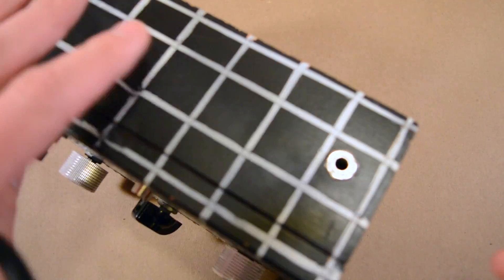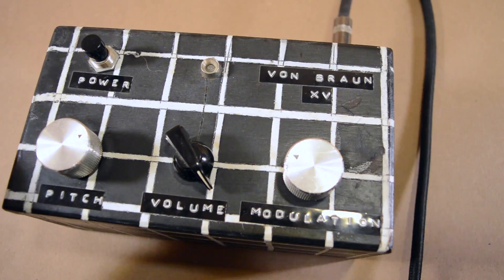Operating the Von Braun 15 is simple. Plug a quarter inch cable into the quarter inch jack on the back of the unit.